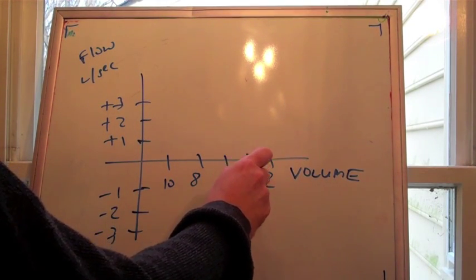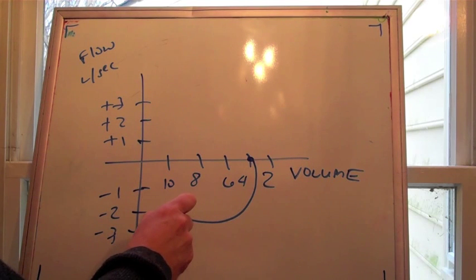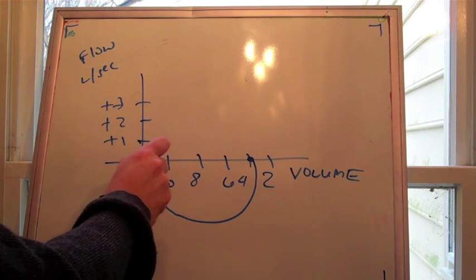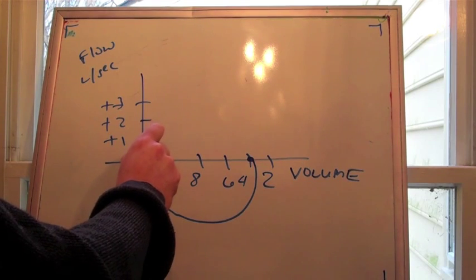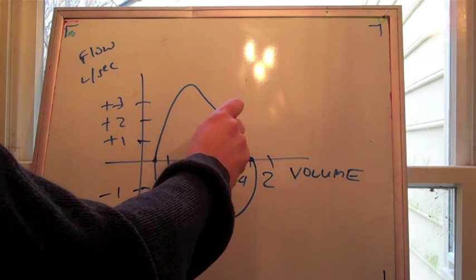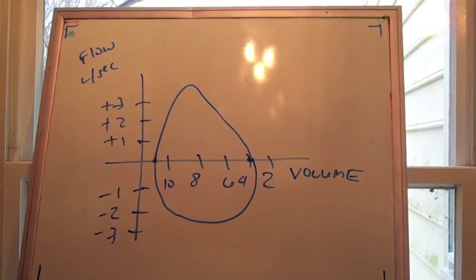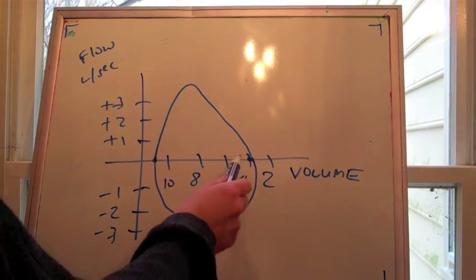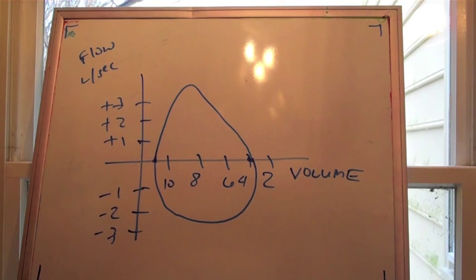So, with me now, you breathe in. You slow down as you get more full, and now you're full. And then you breathe out. When you breathe out all that air. And that's what a pretty normal flow volume loop looks like.